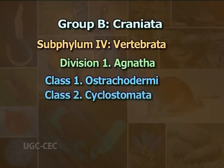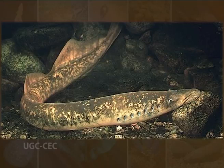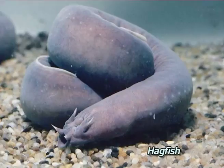Class 2: Cyclostomata — in Greek, cyclos means circular and stoma means mouth. Cyclostomata are the living Agnathans. Body is eel-like, long and cylindrical. The skin is soft and devoid of scales. Mouth is rounded or suctorial. Endoskeleton is cartilaginous. Cyclostomata includes lampreys and hagfishes. They have 5 to 16 pairs of internal gills in different species.